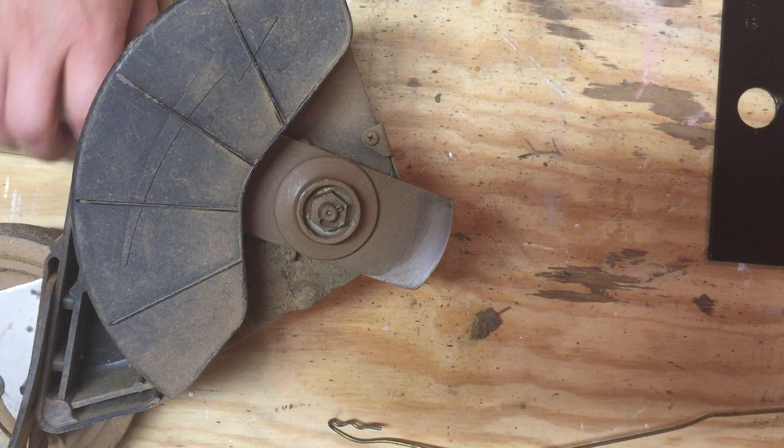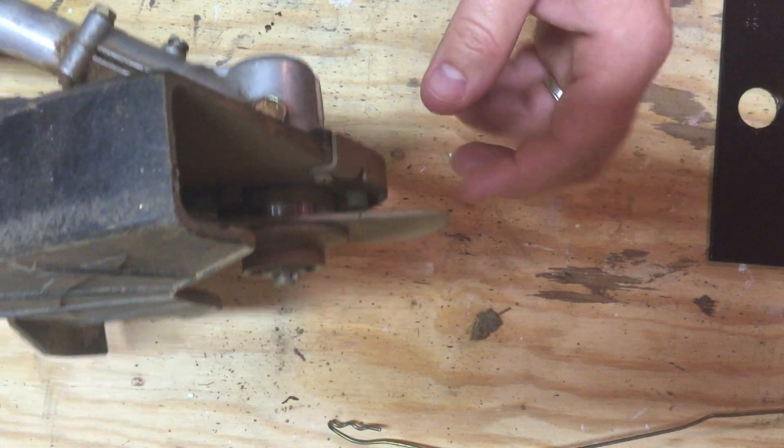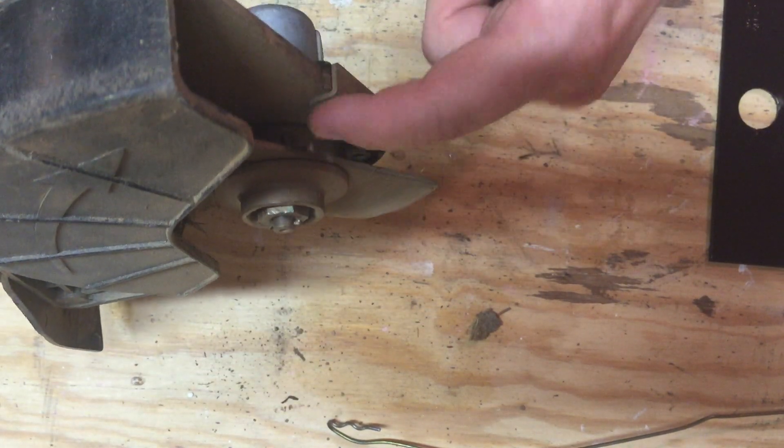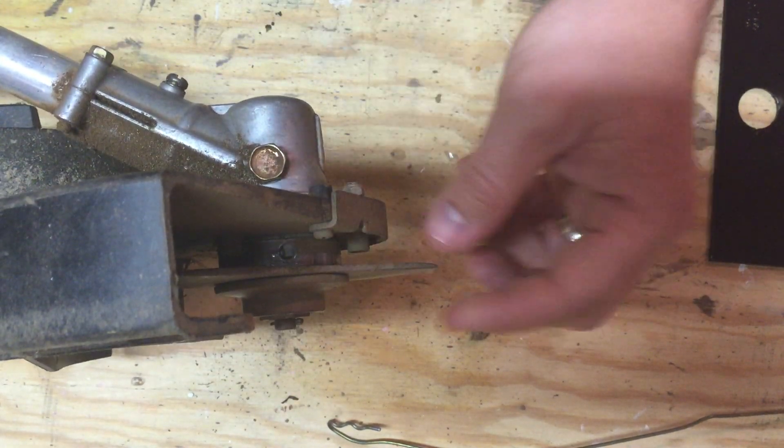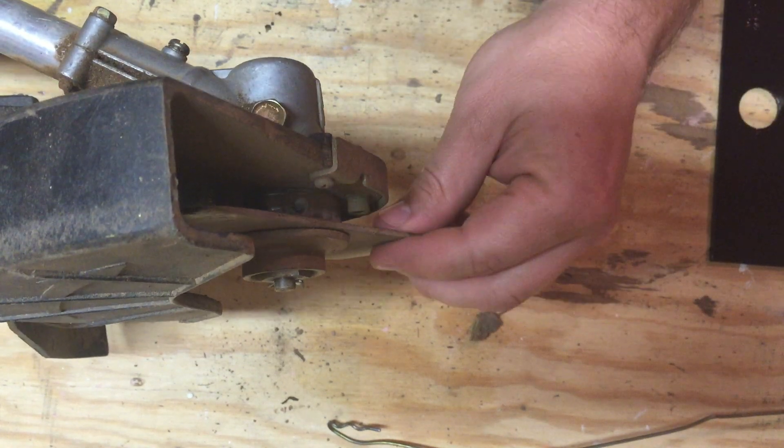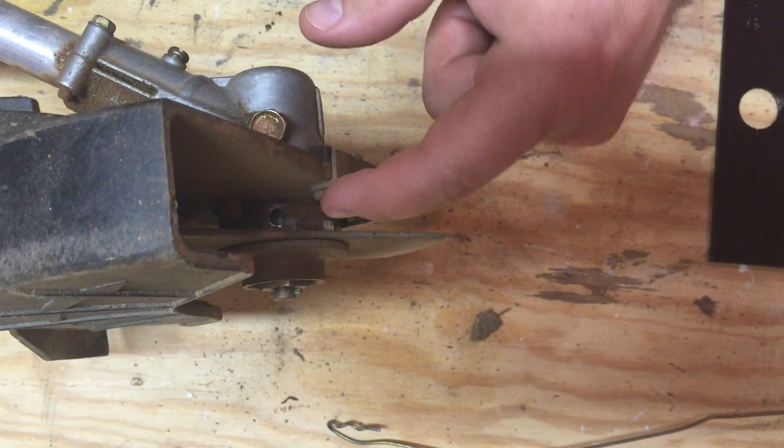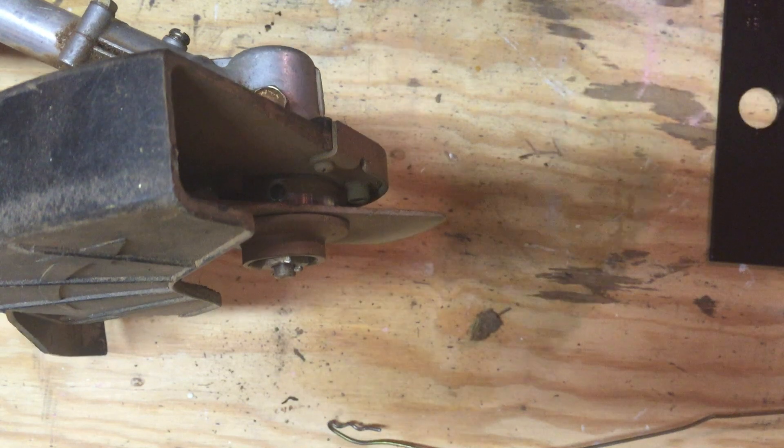The first step is to locate the hole on the side of this rotating disc right here. There's a hole in here and it lines up with a hole inside the shaft.